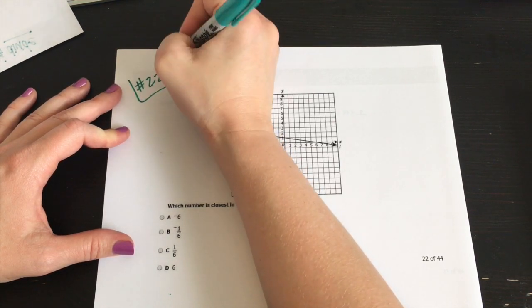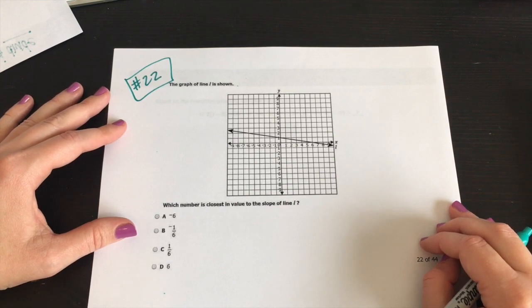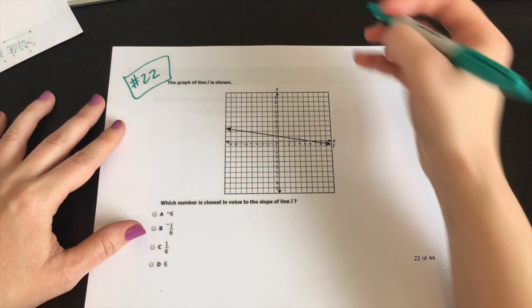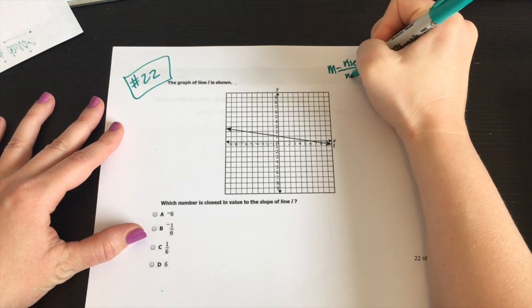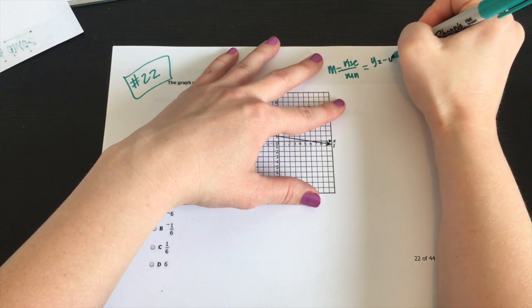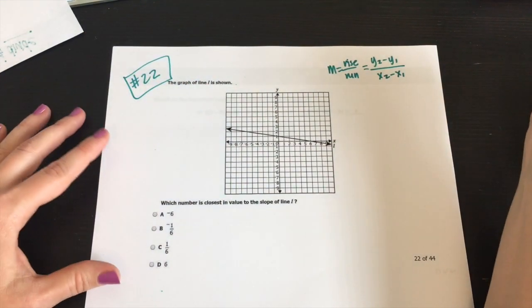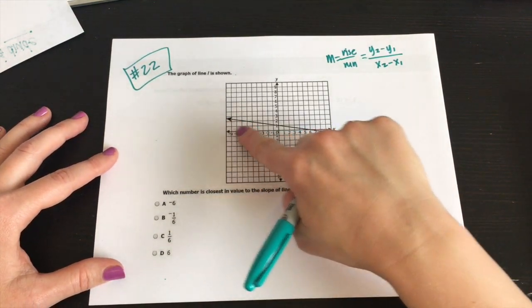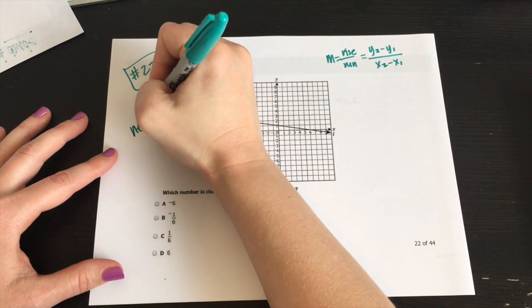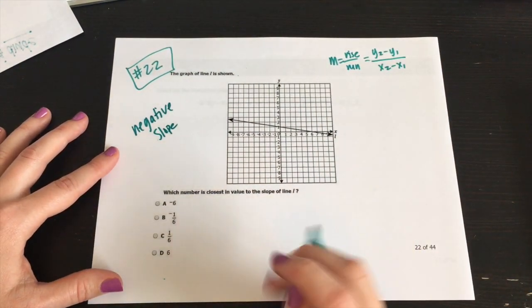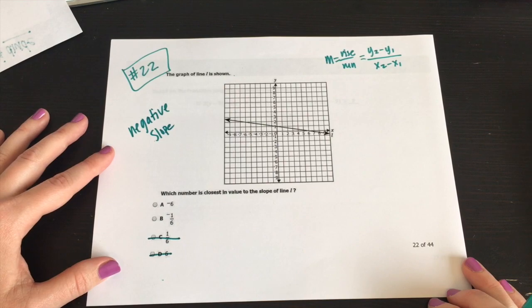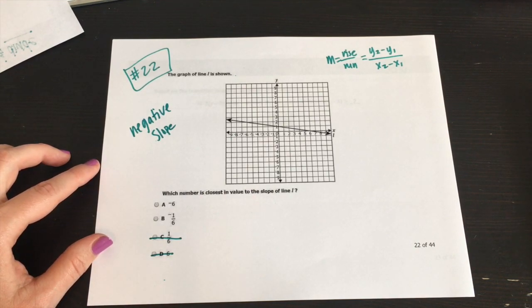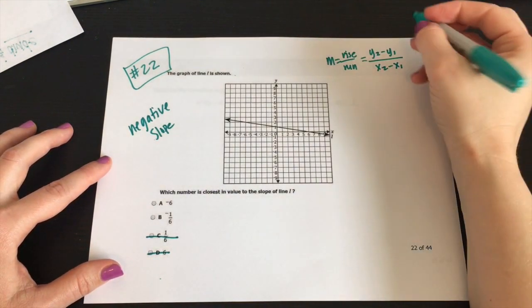Number 22. The graph of the line L is shown. What number is closest in value to the slope of the line? So here we are again with slope. There's two ways you can do this. Slope is your rise over your run. It's also Y two minus Y one over X two minus X one. So we have the first thing I want you to notice is that we're going this way. This is a negative slope. So we can instantly eliminate option C and D because it's not possible. So these are our slope options.